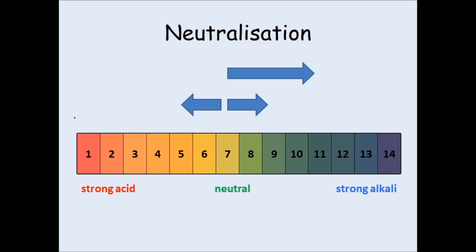It works the other way too. For instance, if you start with an alkali at a pH of 11 and you want to add it to the same amount of acid, to get a neutral solution you have to add that alkali to an acid at pH of 3. They balance out and you end up with a solution at pH of 7, which is neutral.